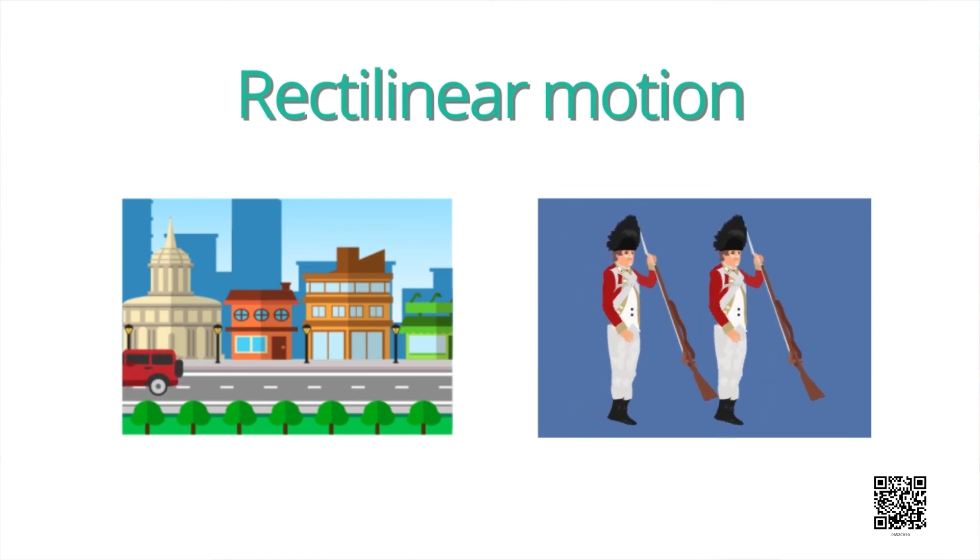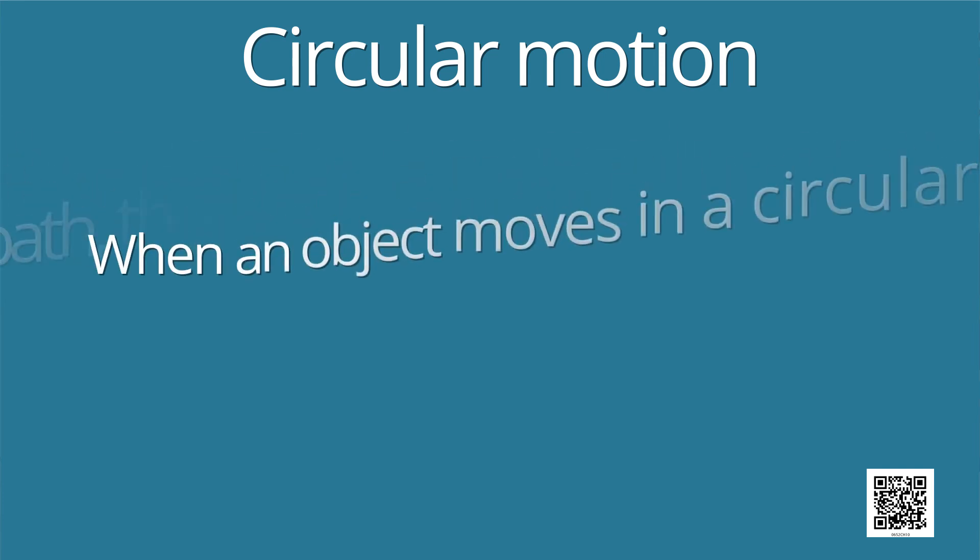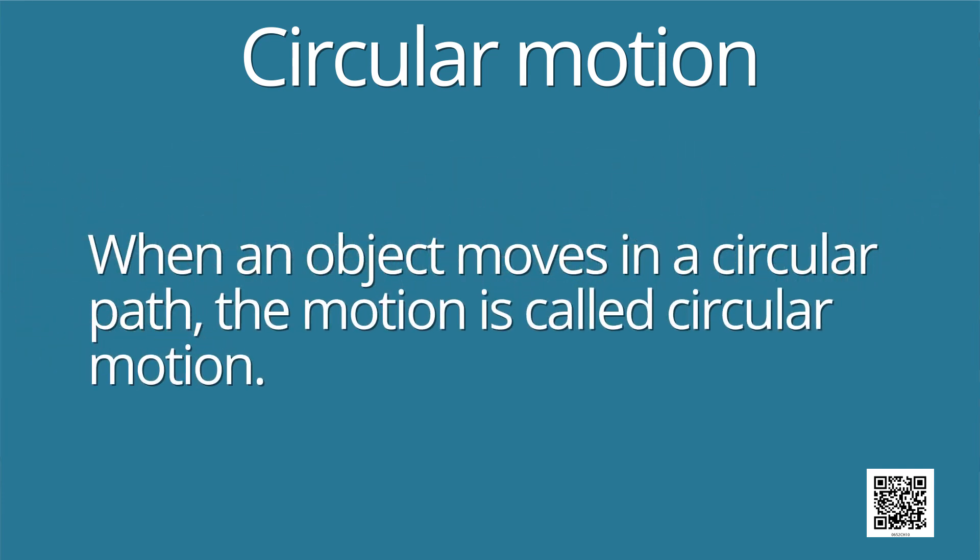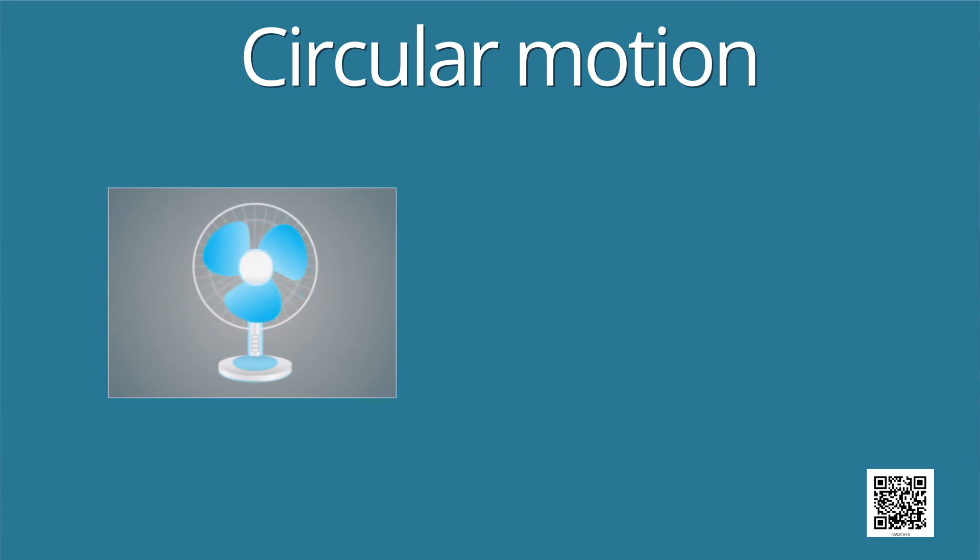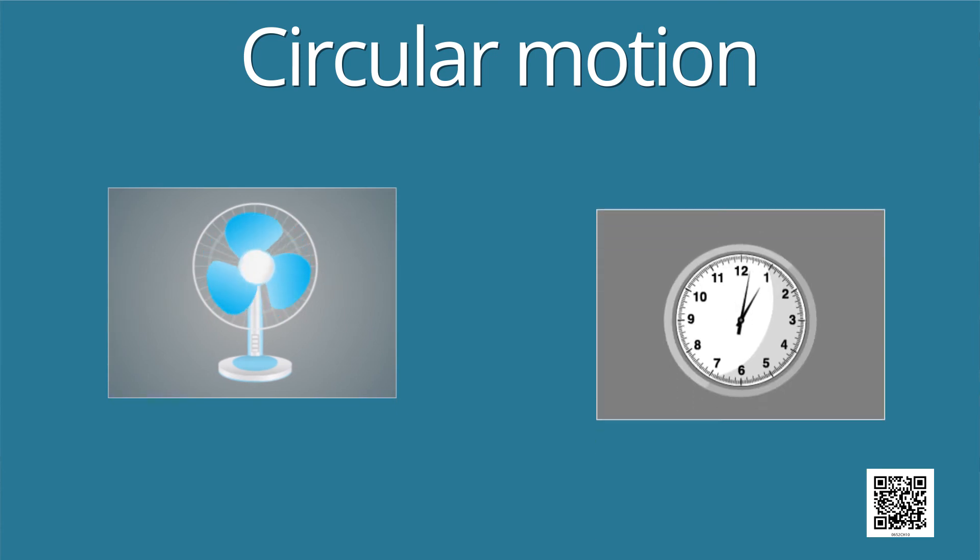Children, there is another type of motion called circular motion. When an object moves in a circular path, the motion is called circular motion. Examples of circular motion are blade of an electric fan or hands of a clock.